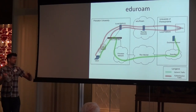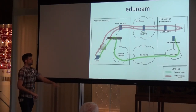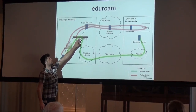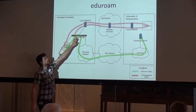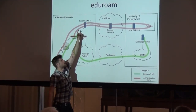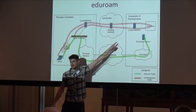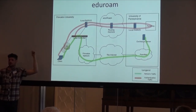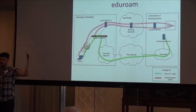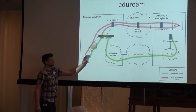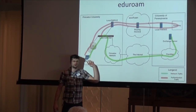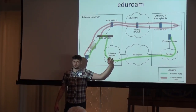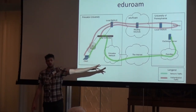Briefly, here's how the technology works: you have a client, the client authenticates against the local system, your authentication is actually transmitted all the way back to Penn, we authenticate you and send an accept back to the foreign university. Then all your traffic actually originates from that university — so if you're at Princeton, all your traffic will originate from a Princeton IP address, but you'll still be able to access all of the internet.